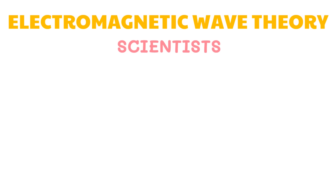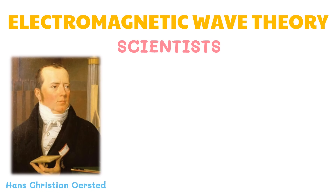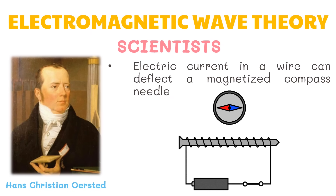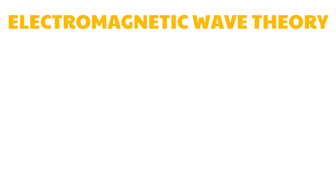Lastly, Hans Christian Ørsted, a Danish physicist and chemist, discovered that the electric current in a wire can deflect a magnetized compass needle — a phenomenon whose importance was widely recognized and which inspired the development of the electromagnetic theory. When experts compiled all the discoveries of these scientists, these formed the basic principles of the electromagnetic wave theory.